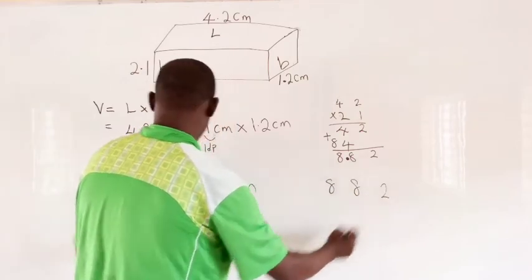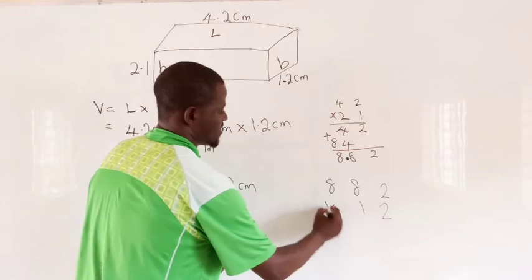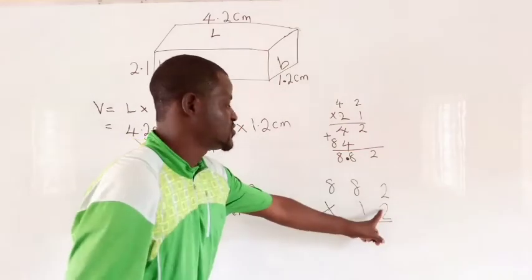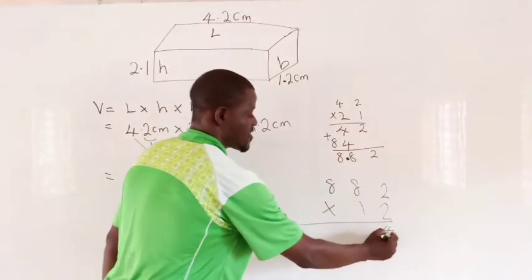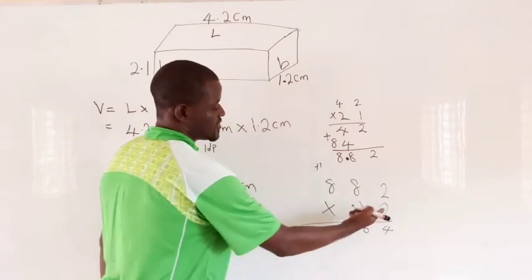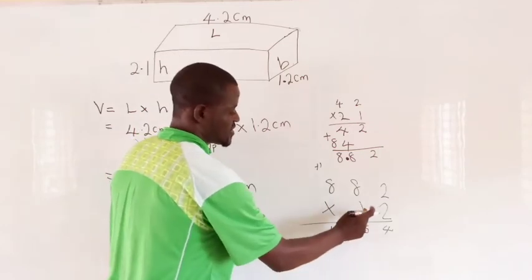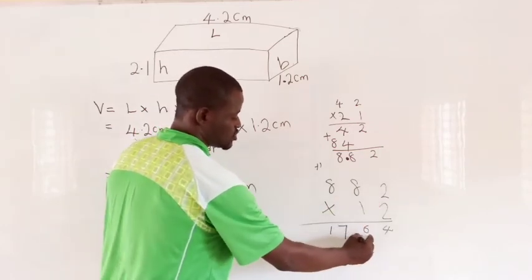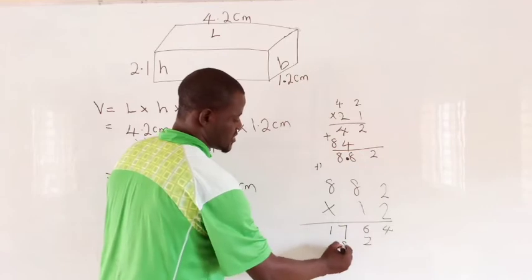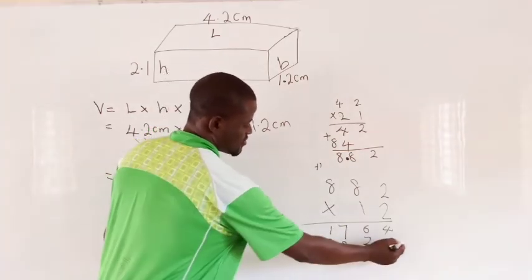8.82 times 1.2. 2 times 2 is 4, 2 times 8 is 16. Write 6, carry 1. 2 times 8 is 16 plus 1 is 17. Then 1 times 2 is 2, 1 times 8 is 8, 1 times 8 is 8. We add.